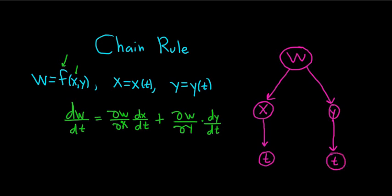And then from this diagram, we can get the chain rule, so watch this. To get from w to x, we have to take a partial. So that would be del w del x. And then to get from x to t, it's a regular derivative, so it's dx dt. And to get from w to y, it's a partial, so del w del y. And to get from y to t, it's a regular derivative, so it's dy dt.